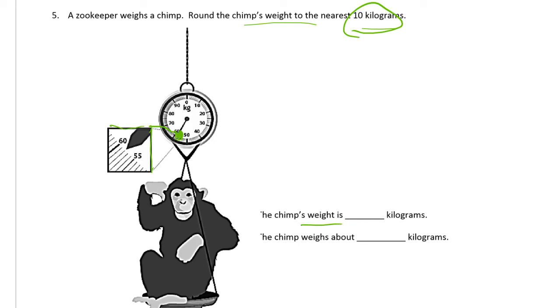We do have to know exactly what the weight is, okay, so here's 55, this would be 56, 57, 58—so that's 58 kilograms, and the chimp weighs about 60 kilograms, we round that up.